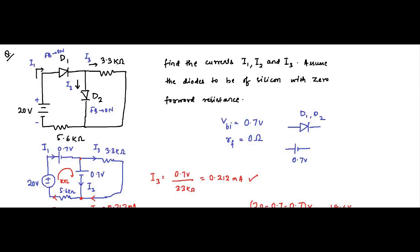All questions related to analog electronics require basic understanding of electronic components, then basic concepts of network theory and circuit analysis techniques. Here: basic understanding of diodes — whether they are on or off — then replacing them with the equivalent circuit based on given information. Since they are silicon with 0 forward resistance, we replaced them with 0.7 volt and no forward resistance, then used KVL and KCL to determine the currents. I hope you like this video — please subscribe to Engineering Tutorial for more videos related to Engineering, Science and Technology.